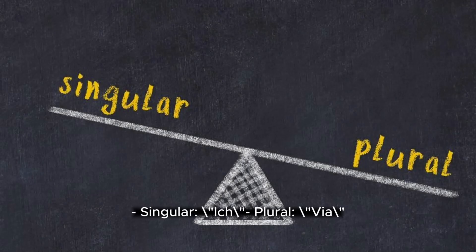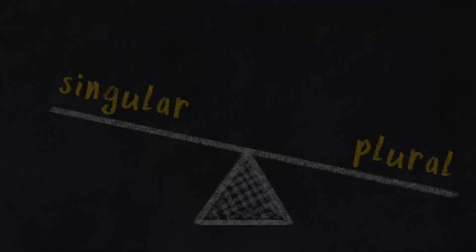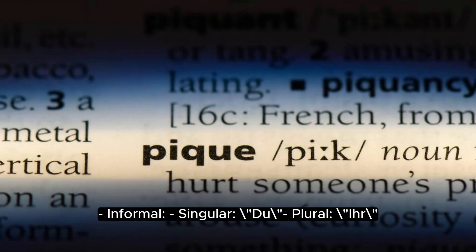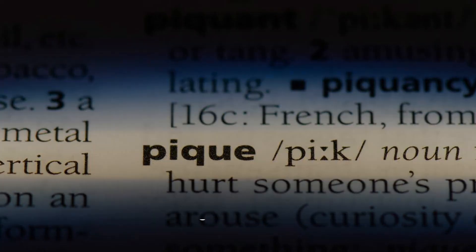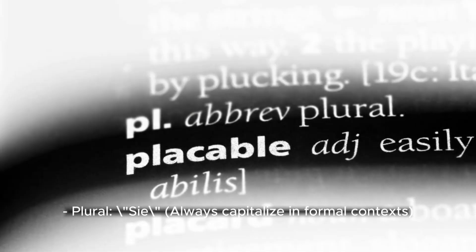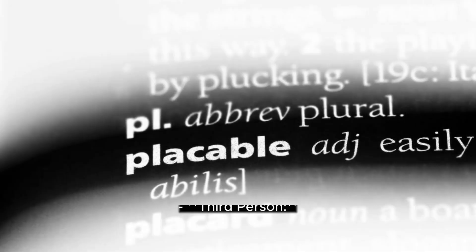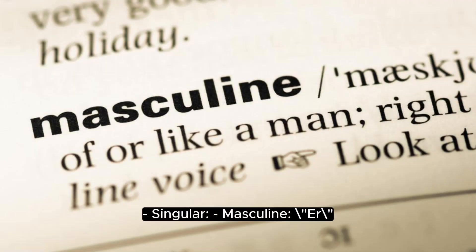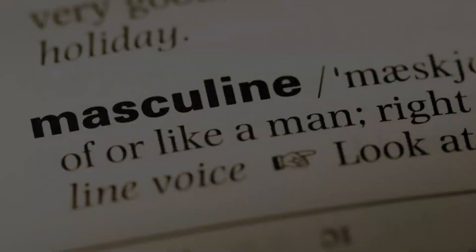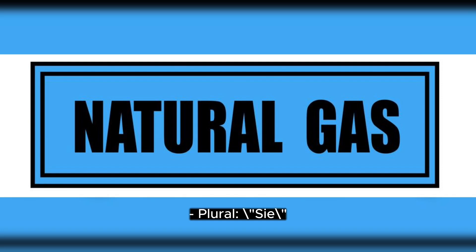First-person — singular: ich; plural: wir. Second-person informal — singular: du; plural: ihr. Second-person formal — singular: Sie; plural: Sie (always capitalize). Third-person — singular: masculine 'er', feminine 'sie', neutral 'es'; plural: sie.